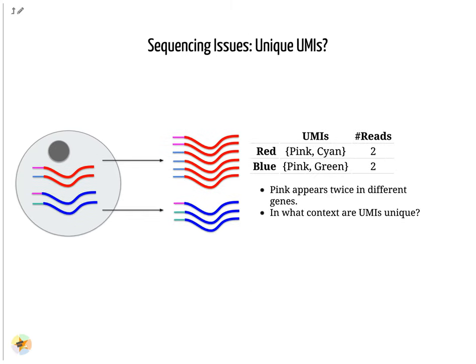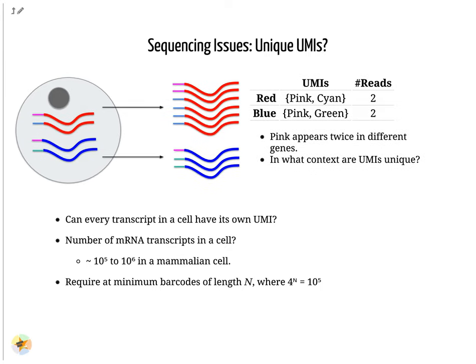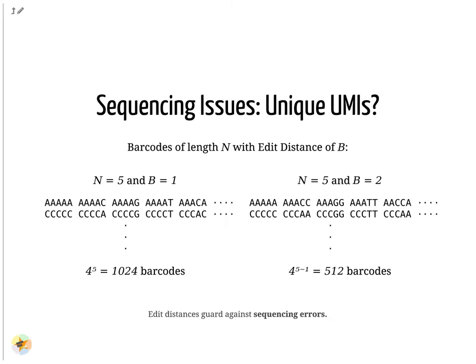UMIs are relatively random, but not truly random. Notice that the pink UMI appears twice, once in the blue transcript and once in the pink transcript. This is due to there being often more transcripts than available UMIs, which are dependent on the number of transcripts in a cell and the length of the barcode. Consider a set of barcodes of length five with an edit distance of one between adjacent barcodes, and another set with an edit distance of two. The former is not robust against common sequencing errors of one base pair, but the latter only allows for half the number of barcodes. This trade-off between the number of available barcodes and guarding against sequencing errors is instrumental in the design of cell barcodes and UMIs.